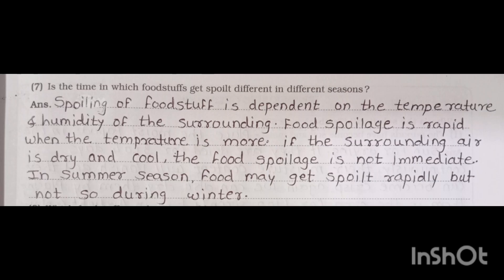Seventh one: is the time in which foodstuff gets spoiled different in different seasons? Answer: spoiling of foodstuff is dependent on the temperature and humidity of the surroundings. Food spoilage is rapid when the temperature is more. If the surrounding air is dry and cool, food spoilage is not immediate. In summer, food may get spoiled rapidly, but not so during winter.